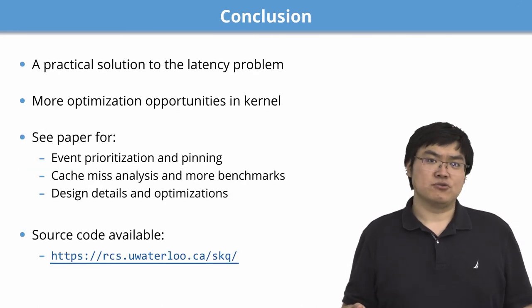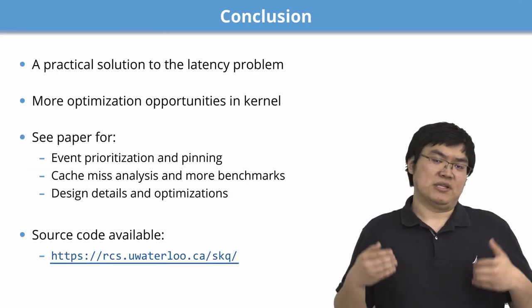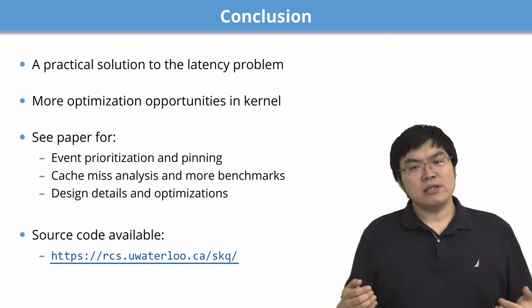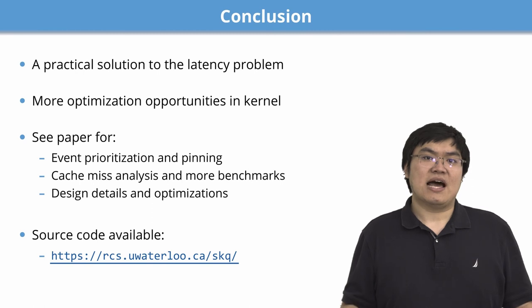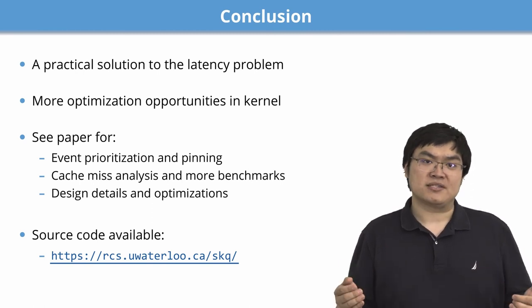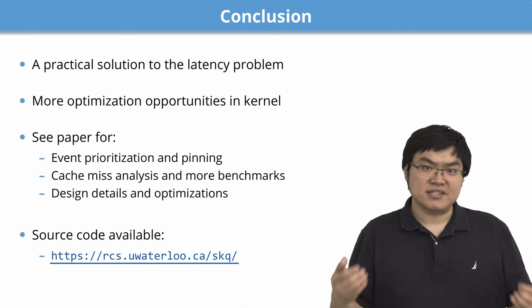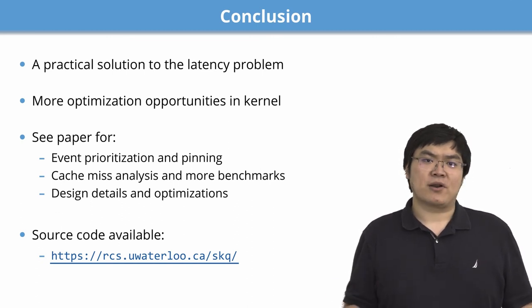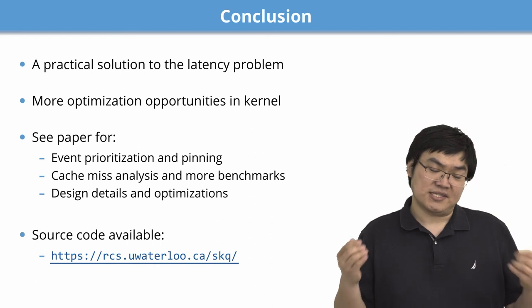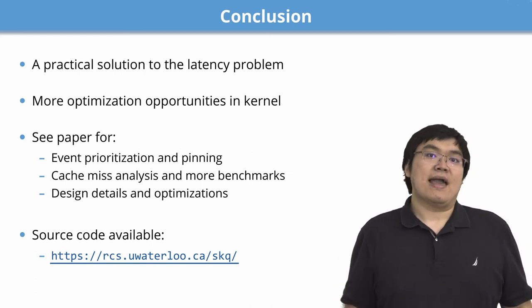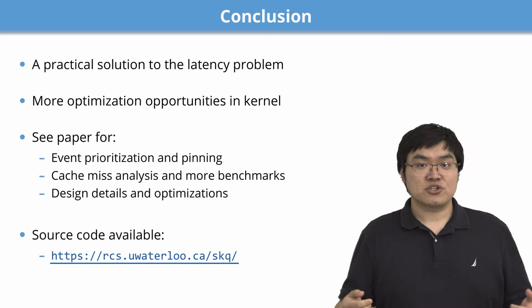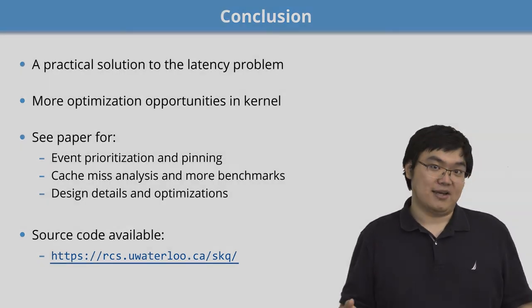SKQ provides a practical solution to the latency problem in a traditional OS kernel. We only looked at the kernel event facility and believe there are more optimization opportunities elsewhere in the kernel. Please see the full paper for more details about event prioritization, additional benchmarks, and important optimizations. Our source code and benchmarks are also available online.